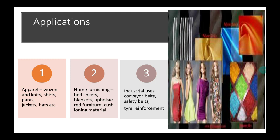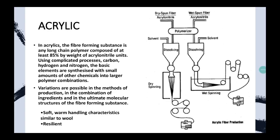Now the applications. It is used for apparel: woven and knit shirts, pants, jackets, hats, etc.; for home furnishing: bed sheets, blankets, draperies, furniture, cushioning material, etc.; and for industrial uses like conveyor belts, safety belts, tire reinforcement.